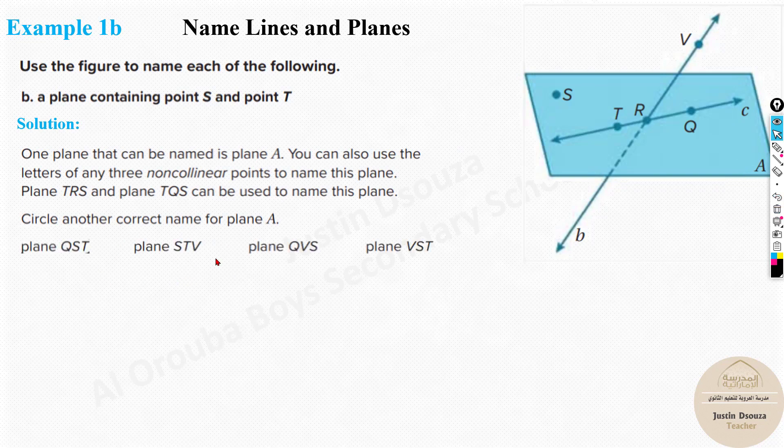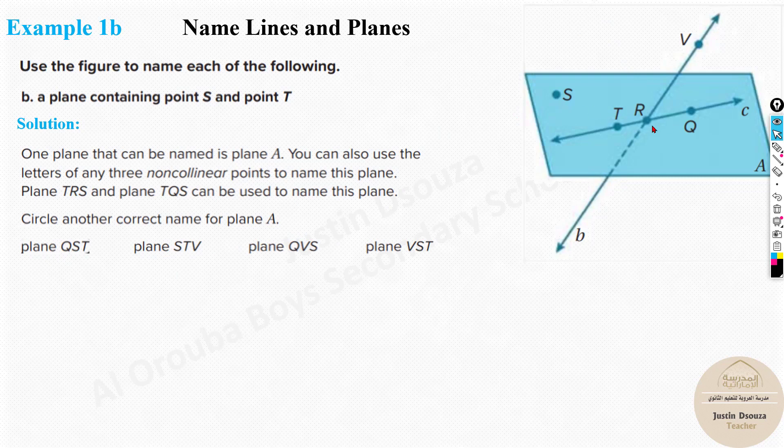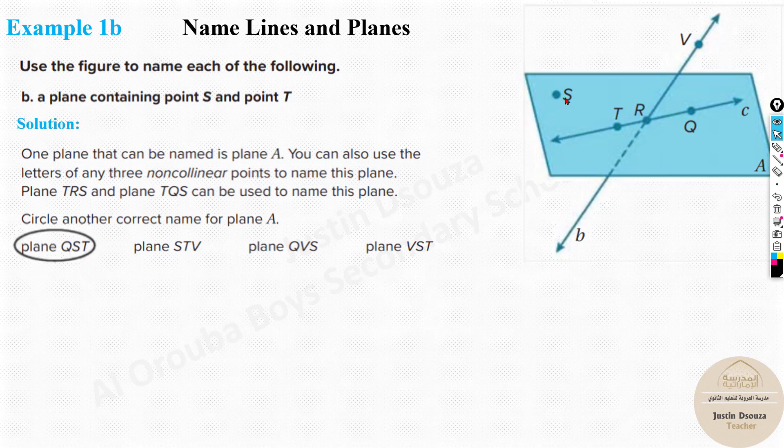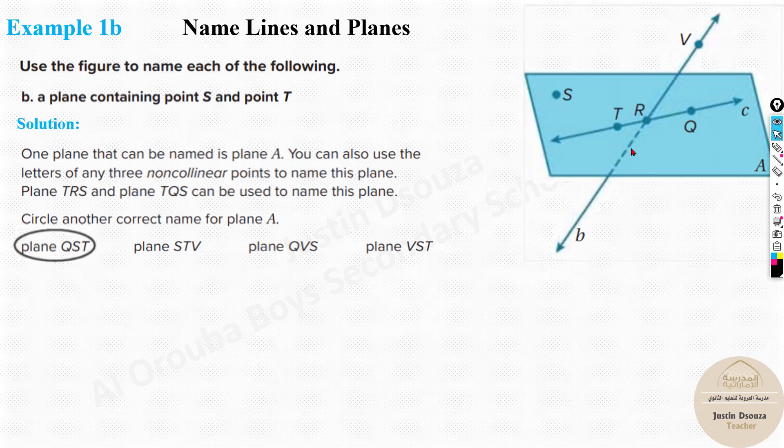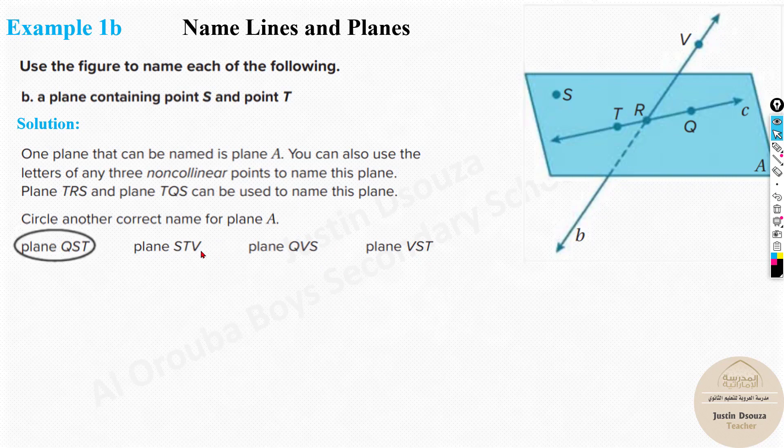And you can, now let's see which is the correct name for this plane A. QST. Yes, that's correct. One answer. Let's check with the other answer. S, T, V is non-collinear. Why? Because this point is not in the plane. So you can't tell S, T, V. This is plane A cannot be denoted by S, T, V. I can see V over here and over here. So these are not the answers. If V is there, obviously it cannot be the answer. Only Q, S, T is the answer.